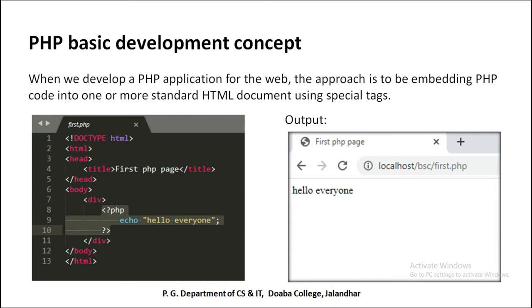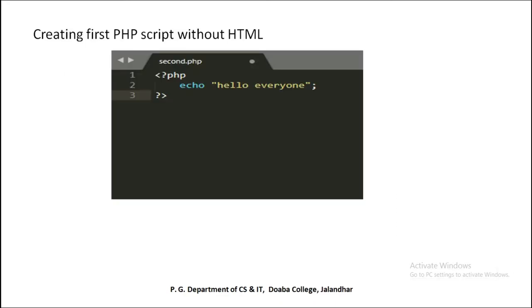Next, if we run PHP code without HTML, how do we write the script? Here I have created a page called second.php. The PHP script is run on a server. First of all, if you have written code, you need a text editor, and for saving the PHP file you have to add the extension with the name of the page as .php — here I am using second.php as the name of my page.